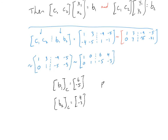Putting them together, the change matrix from b to c equals [[6, 4], [negative 5, negative 3]]. That's how I change vectors written with respect to basis b and produce vectors written with respect to basis c.